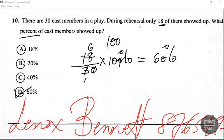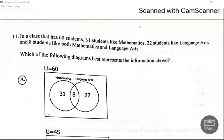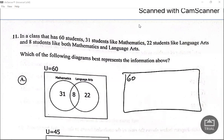Let's look at number 11. In our class there are 60 students. 31 students like mathematics. So let's put mathematics. And then let's see if it's going to be intersecting, yeah, because based on what they said 8 students like both.